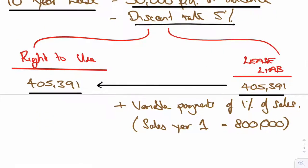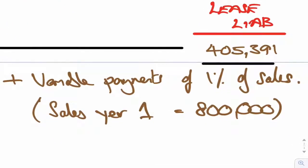Okay, now what I'm saying is though, we've got this variable payment of 1% of sales. So if sales were 800,000, an extra 8,000 per annum, do I add it into the lease liability at the start?